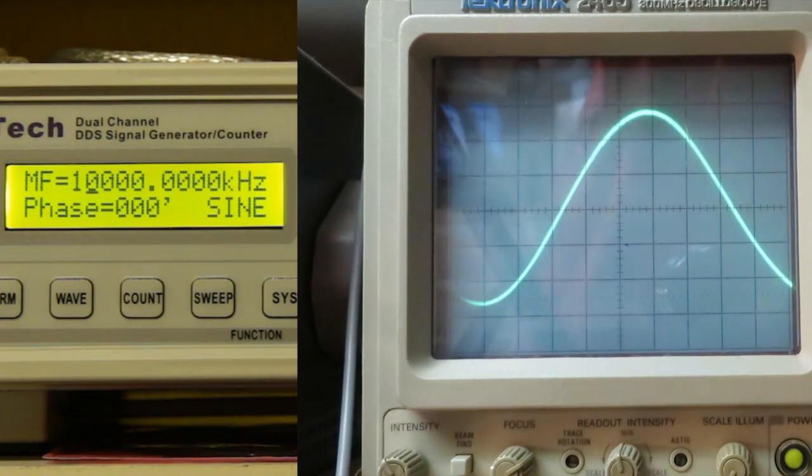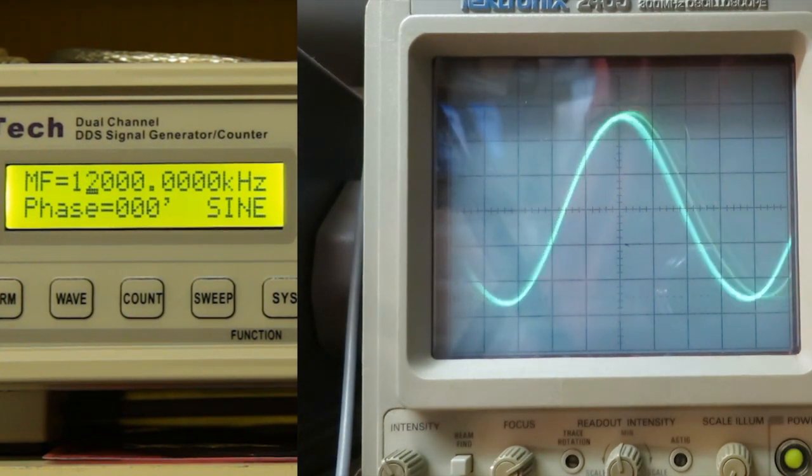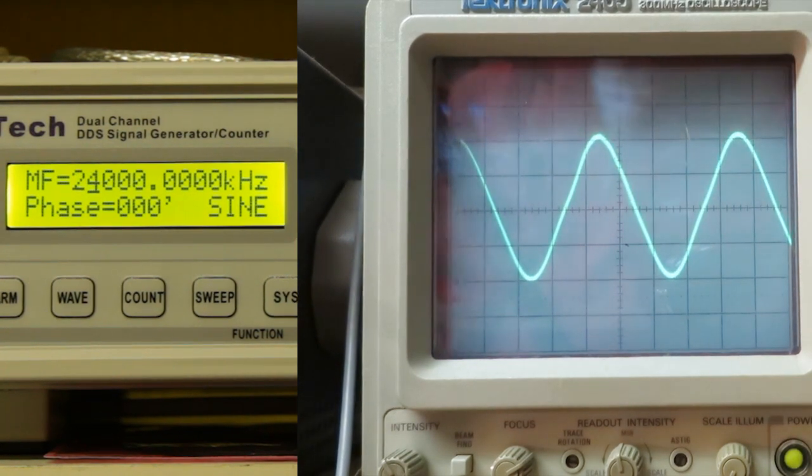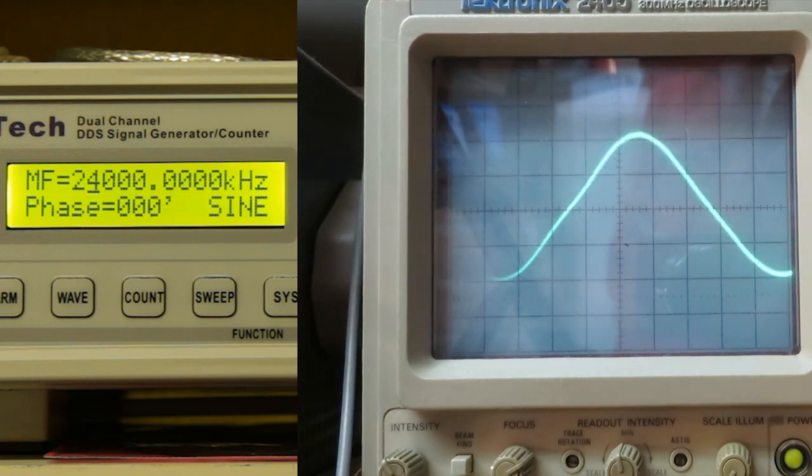At the maximum frequency of 24 MHz we can see that the waveform gets some deformations. But all in all it is a very good value for the money. The amplitude drops from 3 to 2 V reaching the maximum frequency.